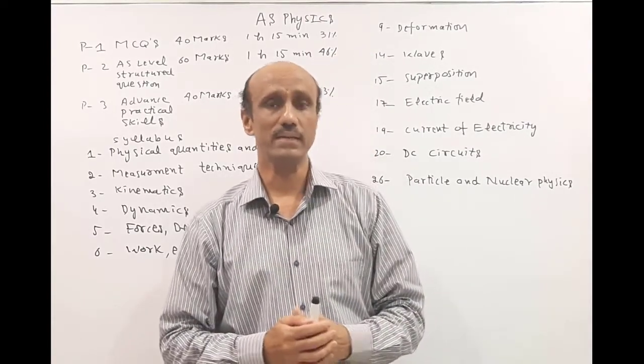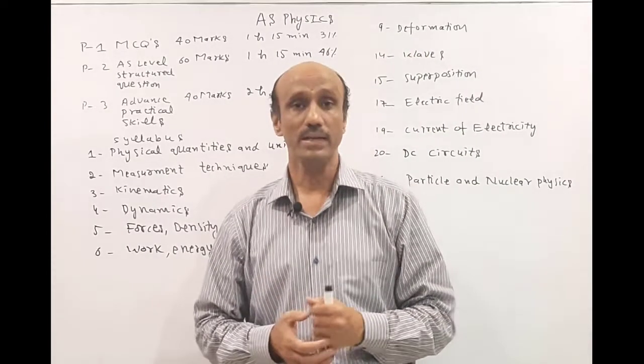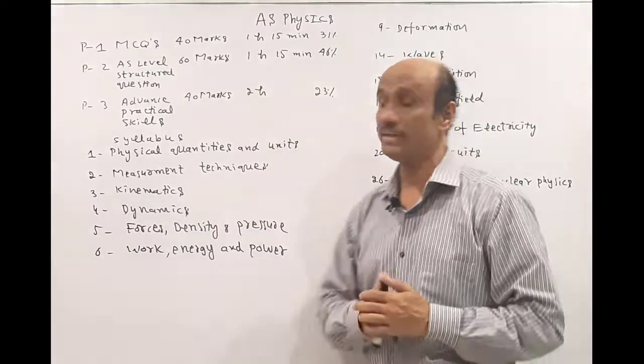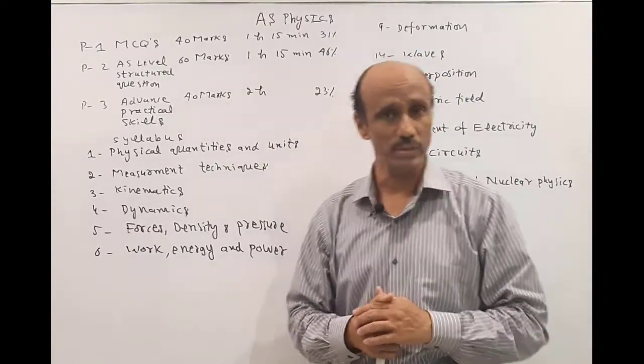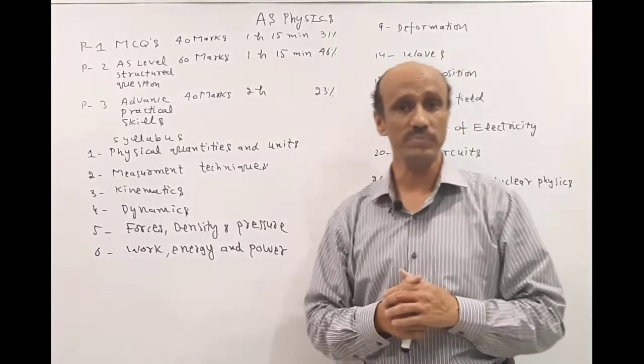The first thing related with the AS level is that you have to appear in three papers. Number one paper is related with the MCQs and 40 MCQs will be asked in that paper. The duration of that paper is one hour and 15 minutes.